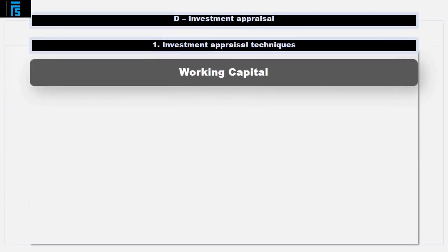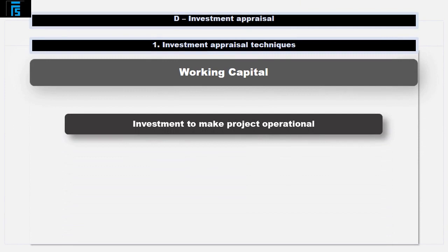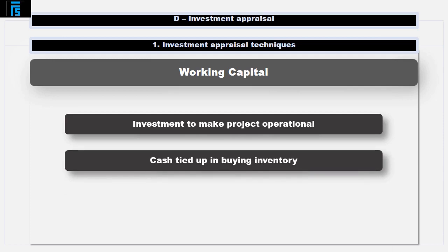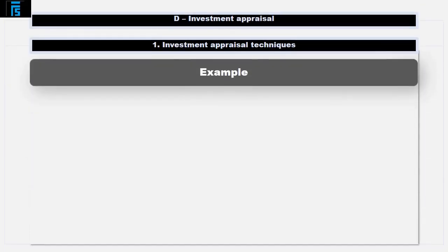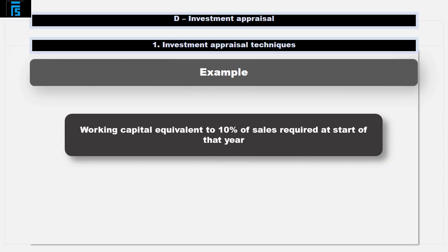Next, let's have a look at working capital. Working capital is an investment required to have a project operating in the first place. For example, without any inventory there won't be any raw materials to turn into the finished product. We have to buy this inventory in advance, so it's therefore a use of cash at the start of the project. Suppose in our example the question states that working capital equivalent to 10% of sales for that year needs to be in place at the start of that year.